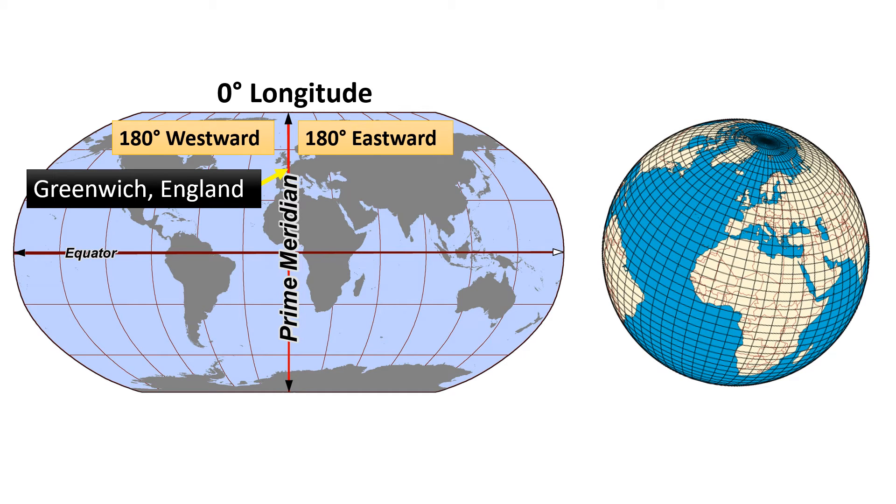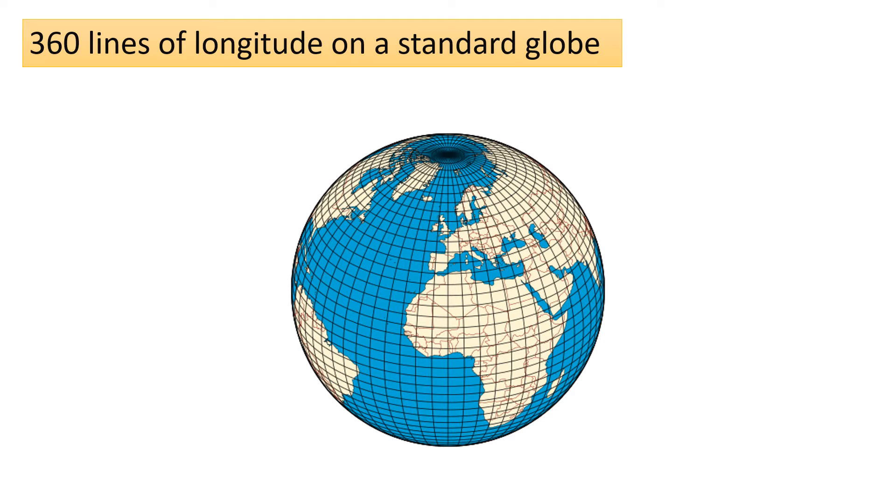So there are 360 degrees of longitude with the Prime Meridian at zero degrees. Each degree of longitude can be divided into smaller units such as minutes and seconds, but for the purpose of counting lines, we are considering the whole degrees. Therefore, there are 360 lines of longitude on a standard globe.